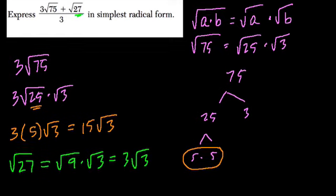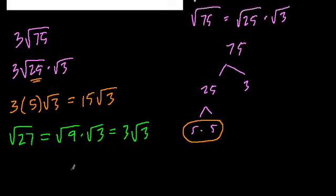And now if we rewrite this fraction, look what happens. We have 15 radical 3, that was radical 75, plus 3 radical 3, that's our numerator.